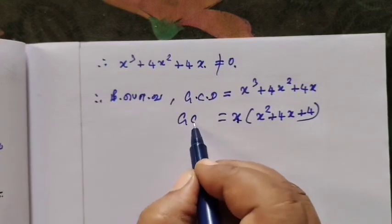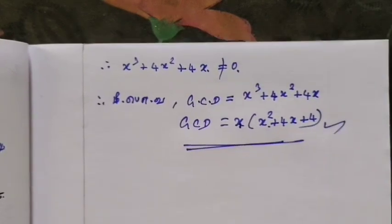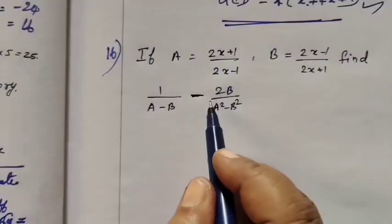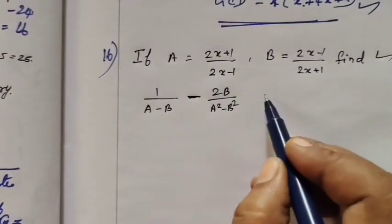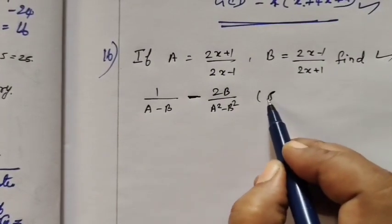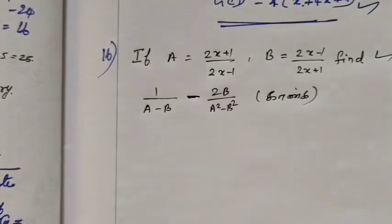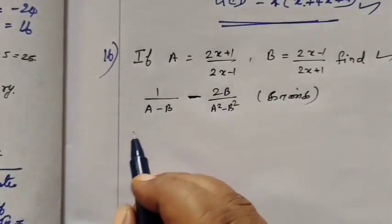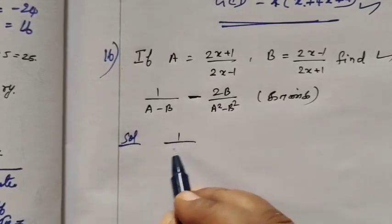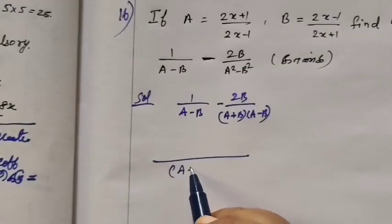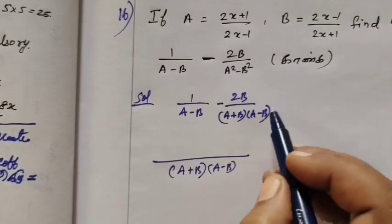So this is a problem. This is a problem x with 1, so this is minus 1 by. First, beginning we simplify, then we substitute a value and b value. So 1 by a minus b, a plus b, a minus b — this will be two times the LCM.